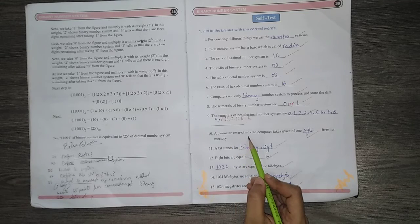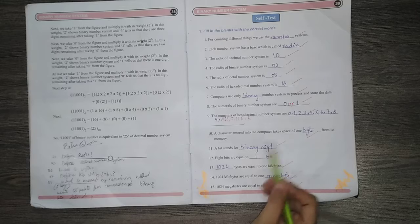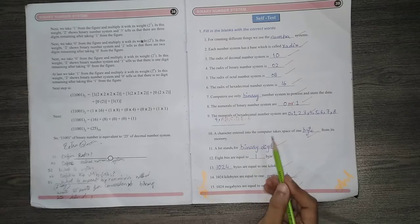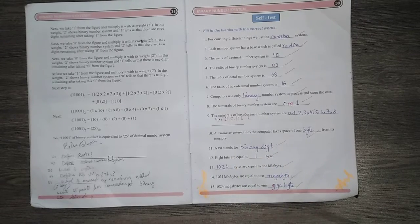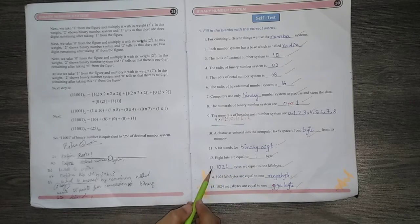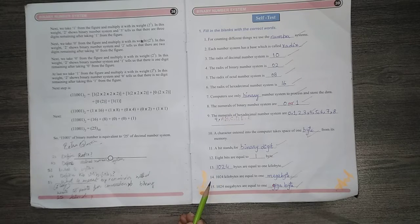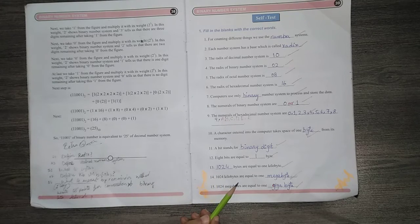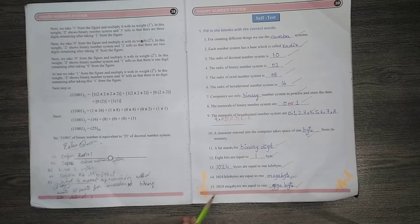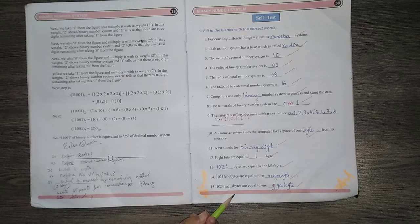Each character entered into the computer takes space of 1 byte in the memory. Bit stands for binary digit. 8 bits are equal to 1 byte. Number 13, 1024 bytes are equal to 1 kilobyte. Number 14, 1024 kilobytes are equal to 1 megabyte. Number 15, 1024 megabytes are equal to 1 gigabyte.